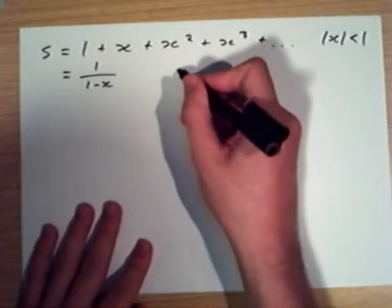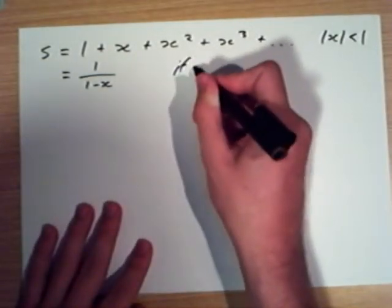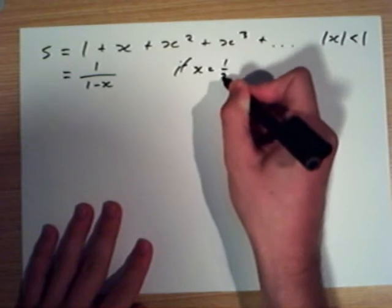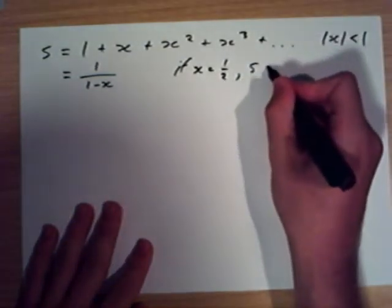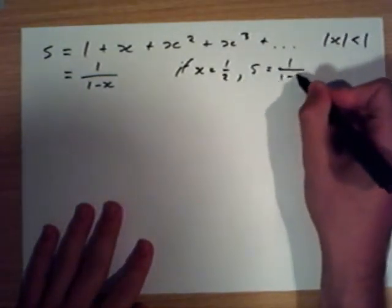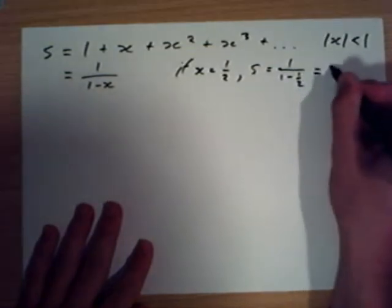For example, if x equals 1 half, S equals 1 over 1 minus 1 half, which is equal to 2.